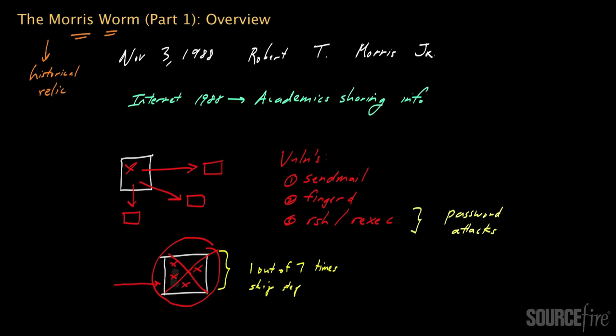At the time the worm was released, the internet comprised some 60,000 or so systems. Based on very loose estimates, over the course of about two days — from November 2nd to November 4th, 1988 — about 10% of these systems, roughly 6,000 systems in total, actually crashed under the weight of being repeatedly infected with the Morris worm. Beyond the damage caused by multiple copies taking up system resources, no other parts of the worm's code exhibited any destructive behaviors.